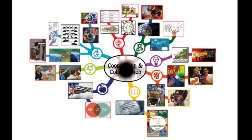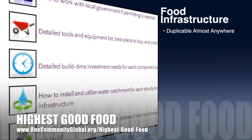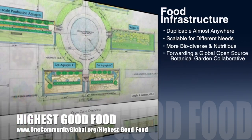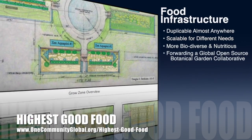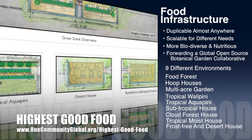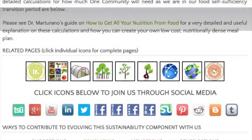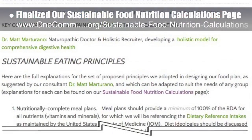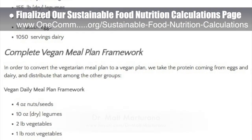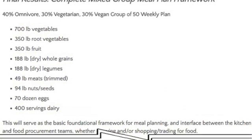One Community's approach to highest good food is duplicable almost anywhere, scalable for different needs, more biodiverse and nutritious, part of forwarding a global open source botanical garden collaborative, and includes nine different free shared and duplicable growing environments. As part of the development of our food self-sufficiency transition plan, this week we finalized and are launching our sustainable food nutrition calculations page to the public, which is based on contributions provided by naturopathic doctor Matt Martrano, creator of the coherent model for comprehensive digestive health.